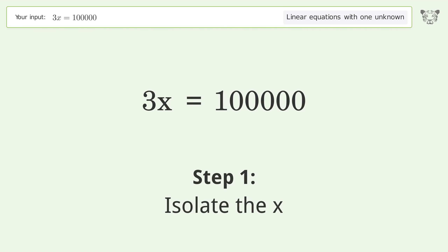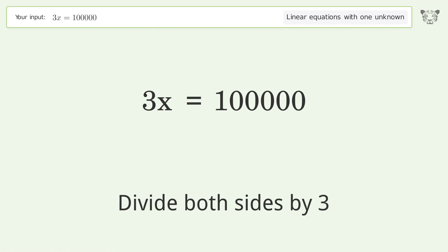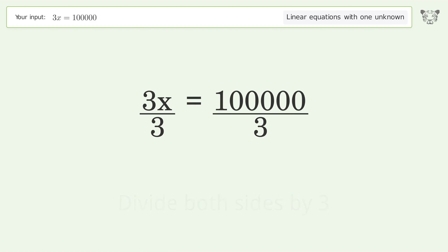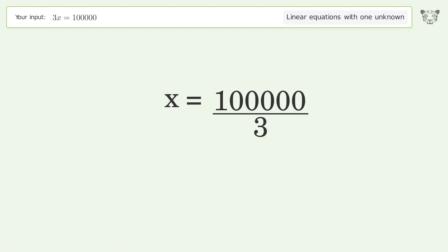To isolate x, divide both sides by 3. Simplify the fraction, and so the final result is x equals 100000 over 3.